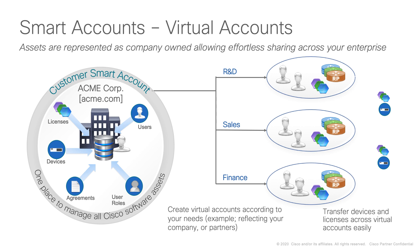Within your smart account, you can then create virtual accounts to mimic or represent the structure of your organization. As you can see here, we've got examples where we've created smart accounts for our R&D teams, our sales organization, and our finance organization. Once your smart account and virtual accounts have been created, any licenses you have can be transferred across any of these virtual accounts seamlessly. So if you need extra licenses within R&D and you have sufficient licenses available within your finance virtual account, those licenses can be transferred and used there — you're not having to purchase extra licenses, you can use licenses from your overall pool.